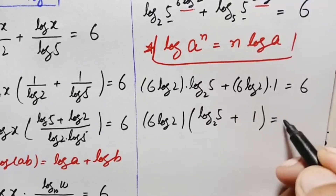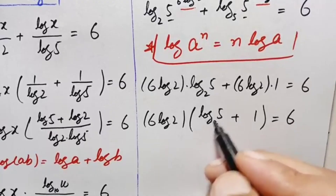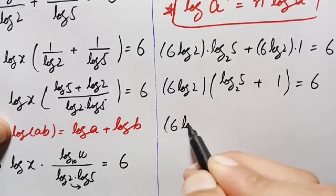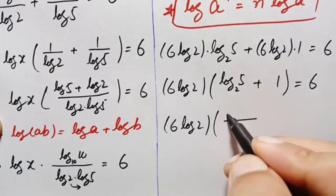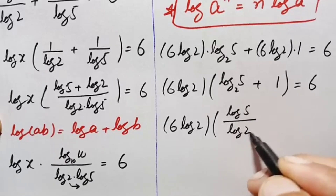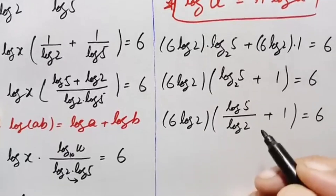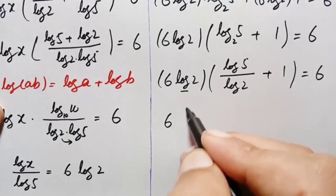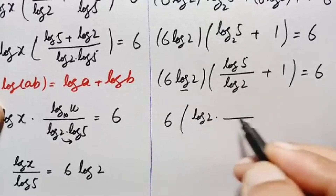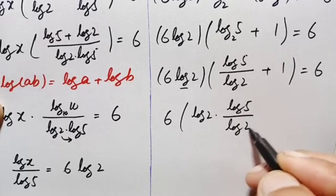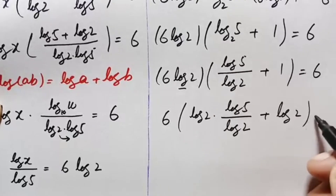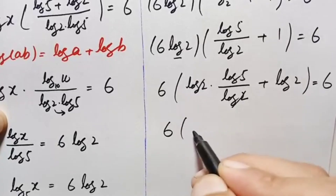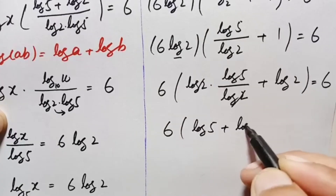Using the change of base property, log of 5 with base 2 becomes log of 5 divided by log of 2. Multiplying log of 2 inside the parenthesis gives 6 times (log of 5 plus log of 2). The log of 2 terms cancel, leaving 6 times (log of 5 plus log of 2).